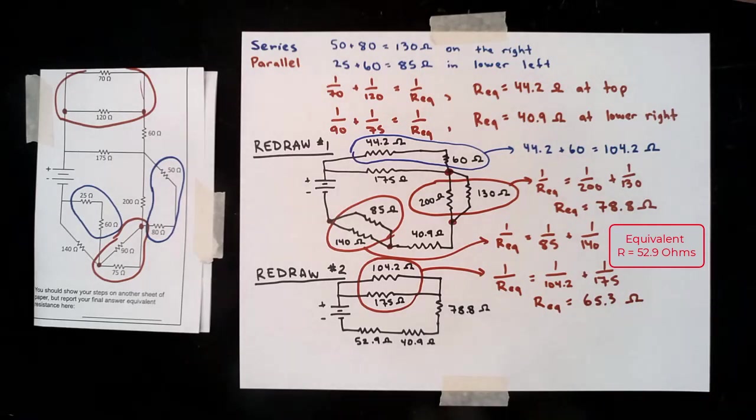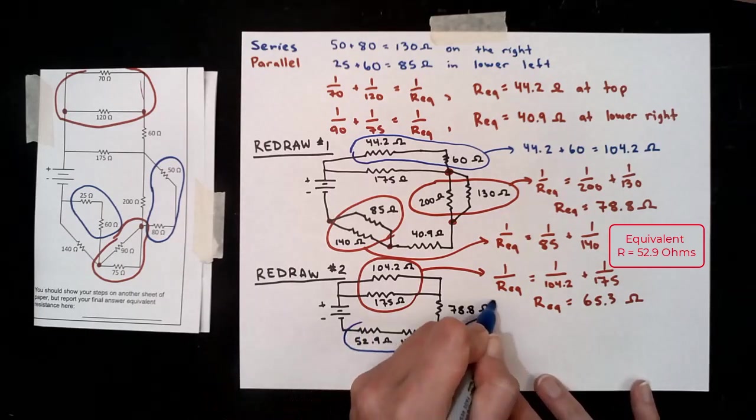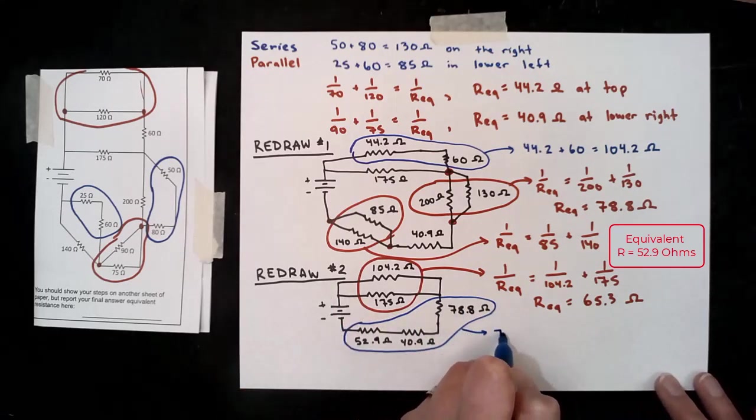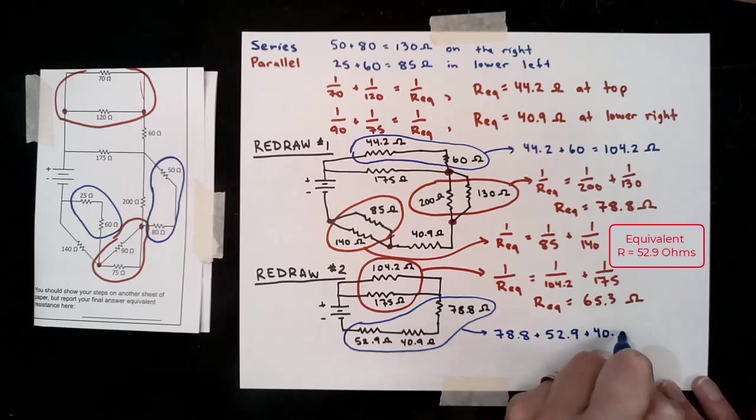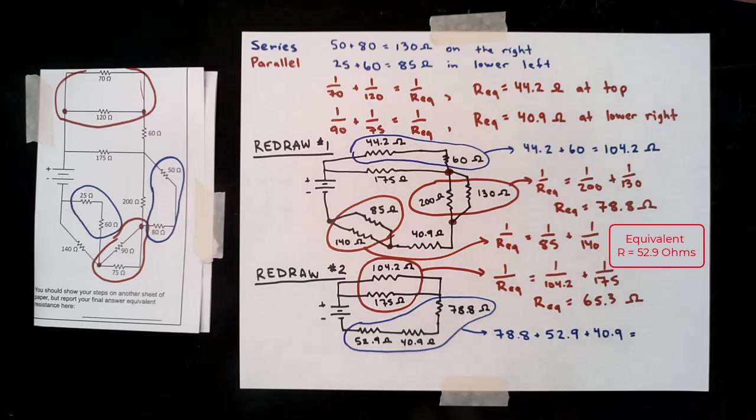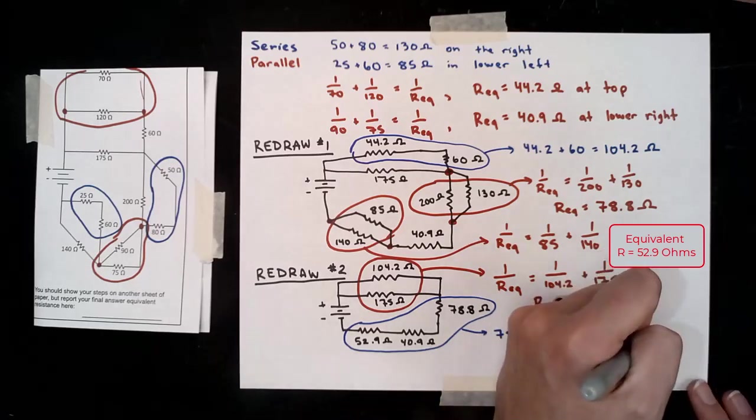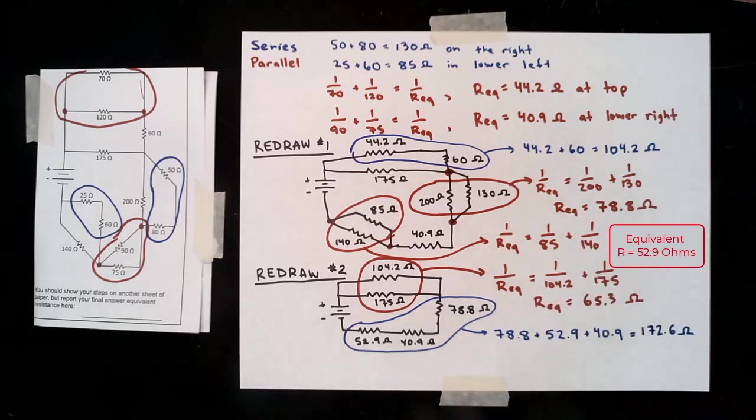Then if we see that that equivalent resistance is now in series with the remaining three, we could stop and just add all four of those numbers together, but that's not as obvious and it really requires us redrawing in our heads. So the safer plan is to add these three resistors that we do see together in series, and get that number that we can then recognize is next to, in series with, the 65.3 ohms. And so we get 172.6 ohms.